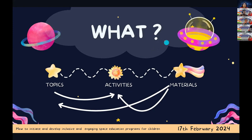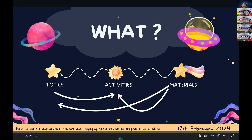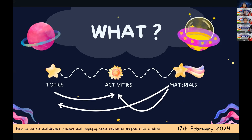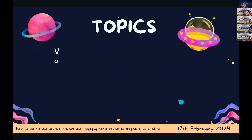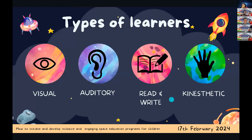Before breaking this down, does anyone know about the types of learners? There are four: visual, auditory, reading and writing, and kinesthetic. Visual learners can just look at content on a projector or blackboard and absorb quickly. Some learn just by listening. Some by reading and writing. Others learn by doing a particular activity.